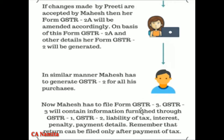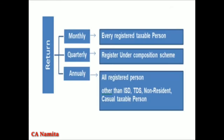GSTR3 is the main return. GSTR3 returns are monthly, quarterly, and annual. There are details like GSTR1 — output supply — and GSTR2 — inward supply. The tax liability, interest, and penalty will be calculated, and then GSTR3 will be prepared so you can file and make your tax payment.